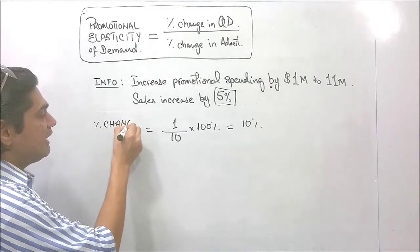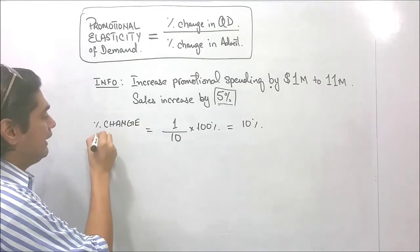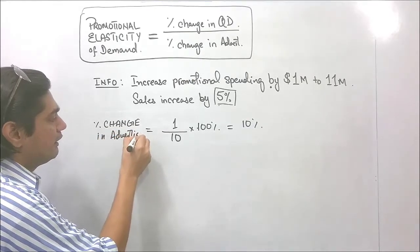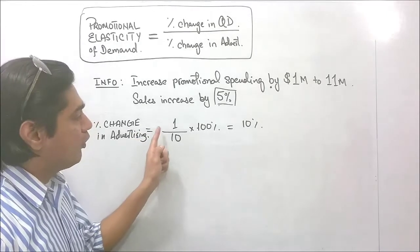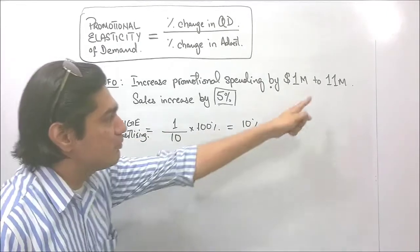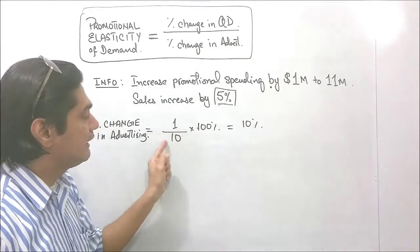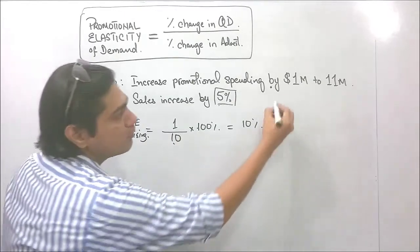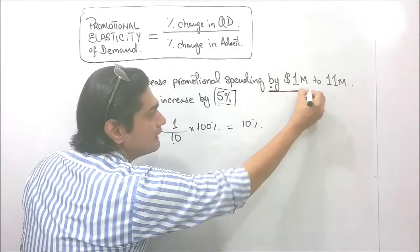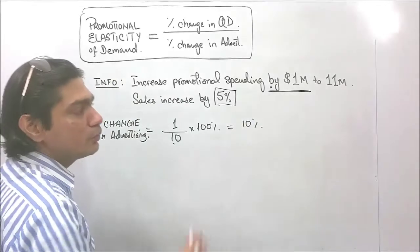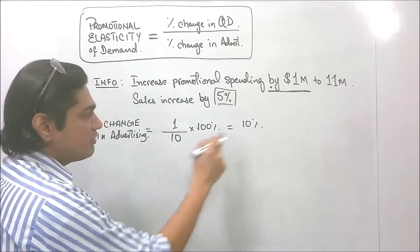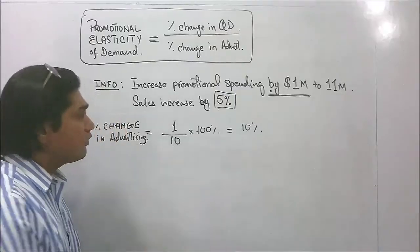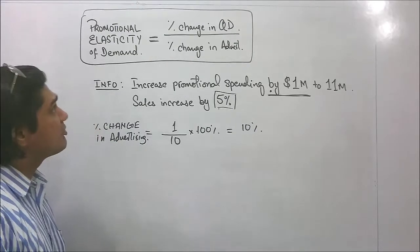So the percentage change in advertising is 10%. That is: 1 divided by 10, where 1 is the difference between 11 and 10, and 10 is the old value. Why is 10 the old value? Because they say it has increased by 1 million to 11 million. Using this, we calculate the percentage change as 10%.